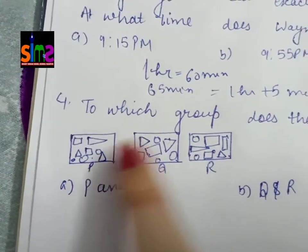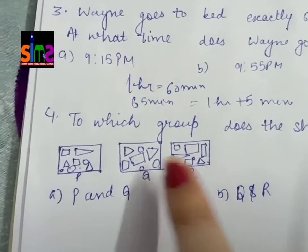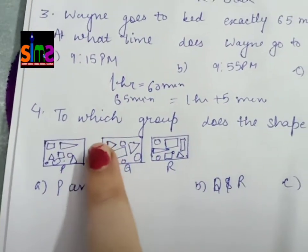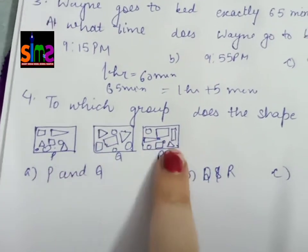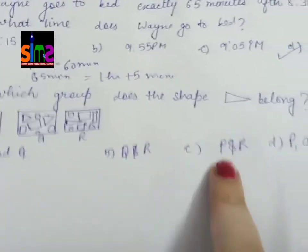So it is a right angle triangle. Then P and R. There is a right angle triangle, so P and R. So that means P and R, which option will be correct.